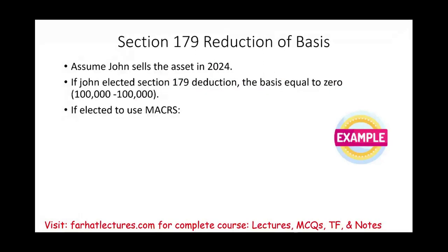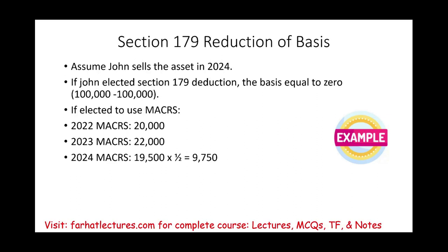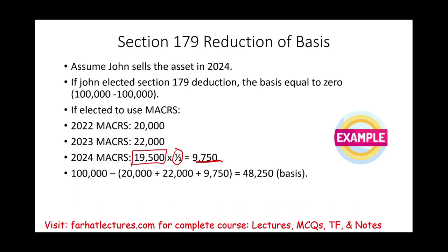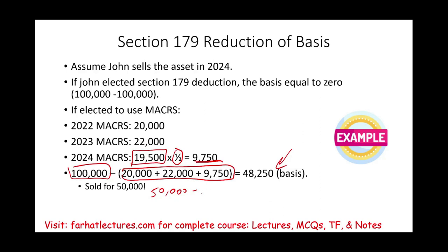If John elected to use MACRS over the three-year period instead: in 2022 he takes $20,000 in depreciation; in 2023, $32,000; in 2024, since the asset is sold mid-year, he takes half a year — $9,750. The basis becomes $100,000 minus the combined three-year depreciation of $51,750, giving a basis of $48,250. If sold for $50,000, John has a gain of $1,750. If sold for less than $48,250, he would have a loss.